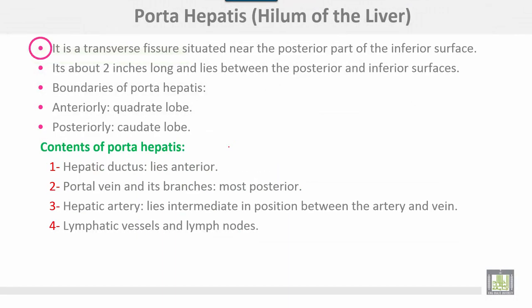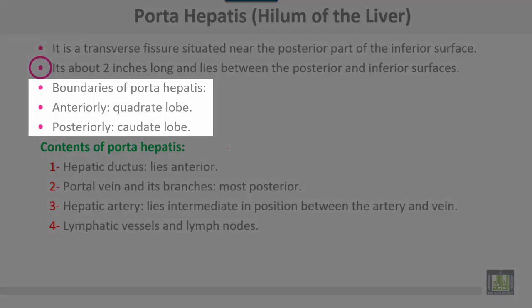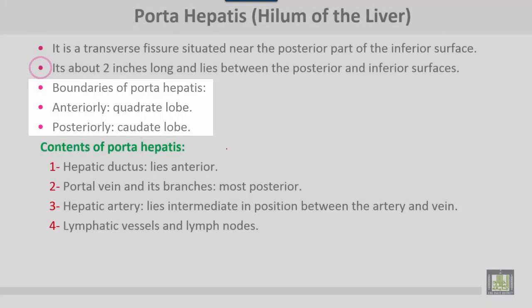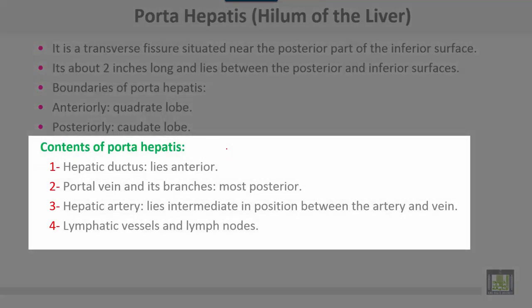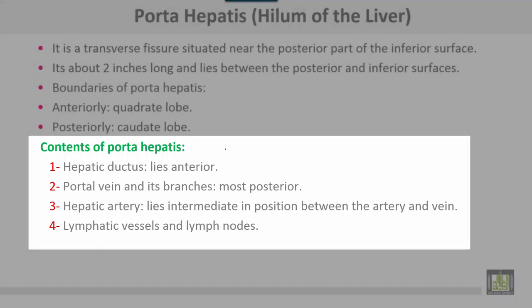The porta hepatis is a transverse fissure situated near the posterior part of the inferior surface, about two inches long, lying between the posterior and inferior surfaces. Its boundaries are anteriorly the quadrate lobe and posteriorly the caudate lobe. The contents of the porta hepatis are: hepatic ducts lying anteriorly, the portal vein and its branches most posteriorly, and the hepatic artery lying in between. Also present are lymphatic vessels and lymph nodes.